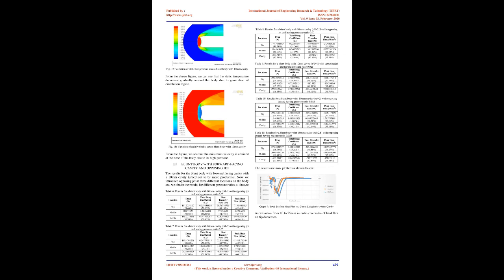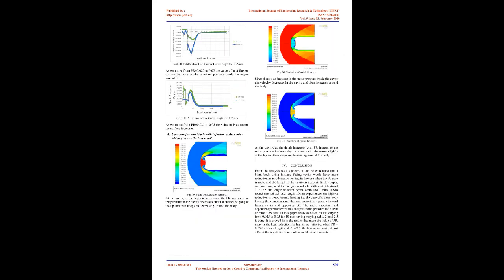From all the above cases, the best results are obtained for a blunt body with a cavity having a depth of 10 mm. Plotting individually the results for different R/D ratios (Graph 7 — total surface heat flux vs. curve length for 10 mm depth), we observe that as the value of radius increases from 10 to 25 mm, there is a reduction in total surface heat flux at the cavity, going to approximately the same value along the surface. Graph 8 (static pressure vs. curve length for 10 mm depth) shows that as radius increases from 10 to 25 mm, the value of static pressure decreases.